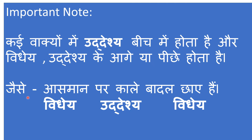For example, in this sentence: Aasmaan par kale baadal chhaaye hai — there are black clouds in the sky. Here the subject, or uddeshya, is kale baadal. And what is being spoken about it — asmaan par chhaaye hai — that is vidhev. So here uddeshya is in the center and vidhev is in the front or back. Please pay attention to such sentences when you come across them in the exam.